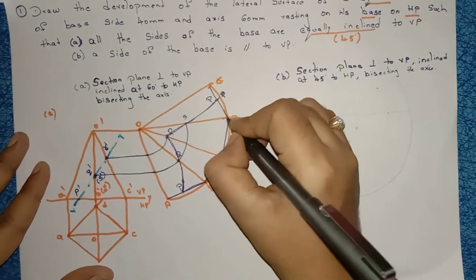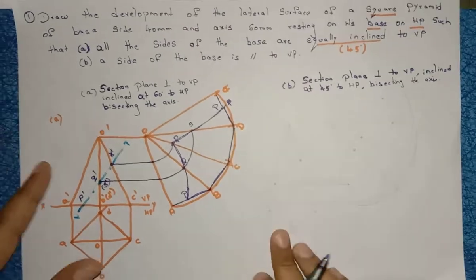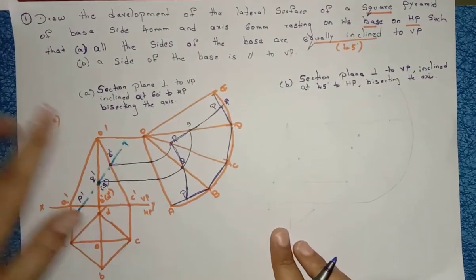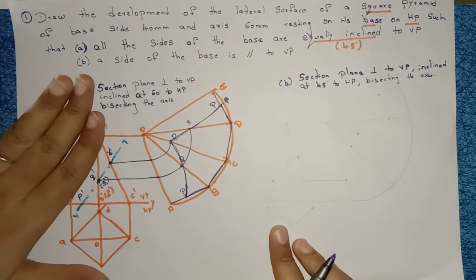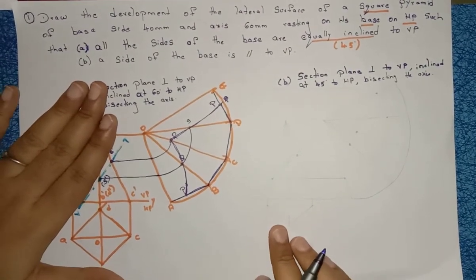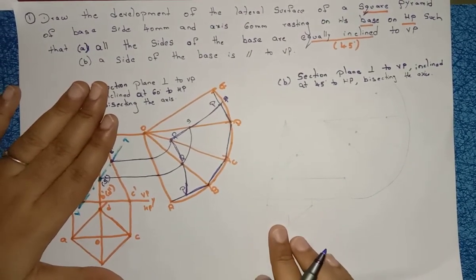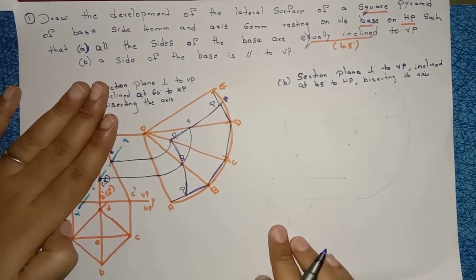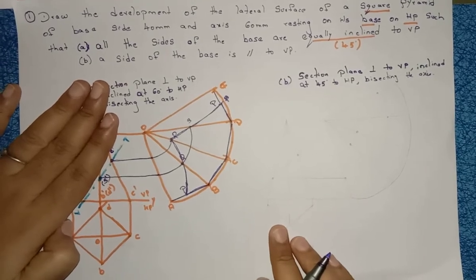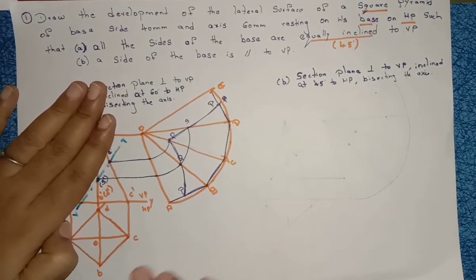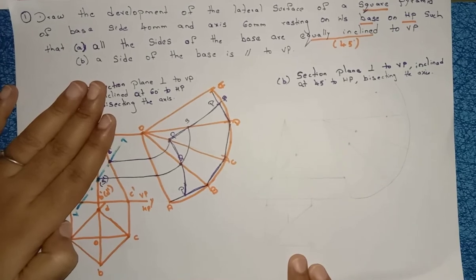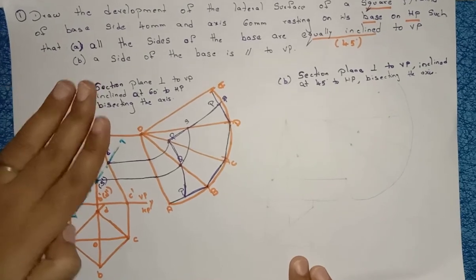The development portion should be drawn dark, while the remaining portion — the part being removed by the sectional plane — should be drawn light. We will see another question to understand better.